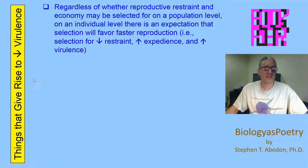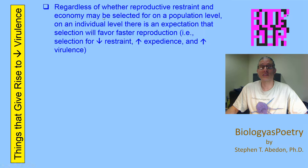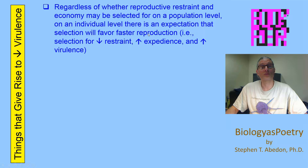Let's consider things that give rise to decreases in virulence — that is, select for decreases in virulence within parasite populations. Regardless of whether reproductive restraint and economy may be selected for on a population level — whether within a host or between hosts — on an individual level there is an expectation that selection will favor faster reproduction.